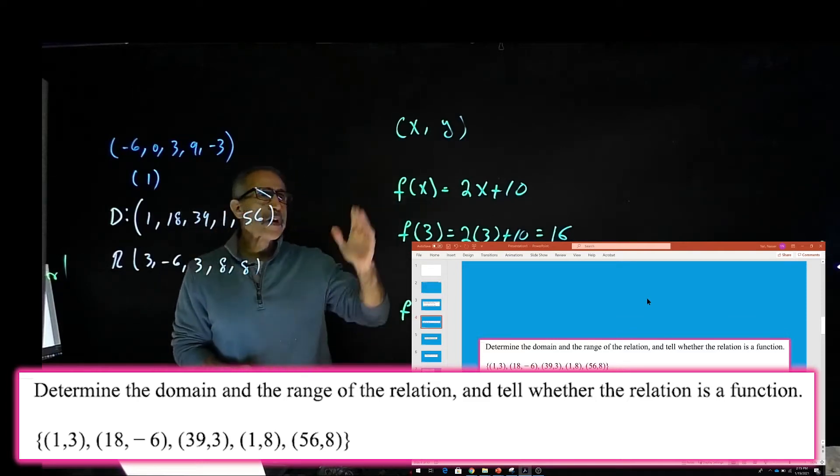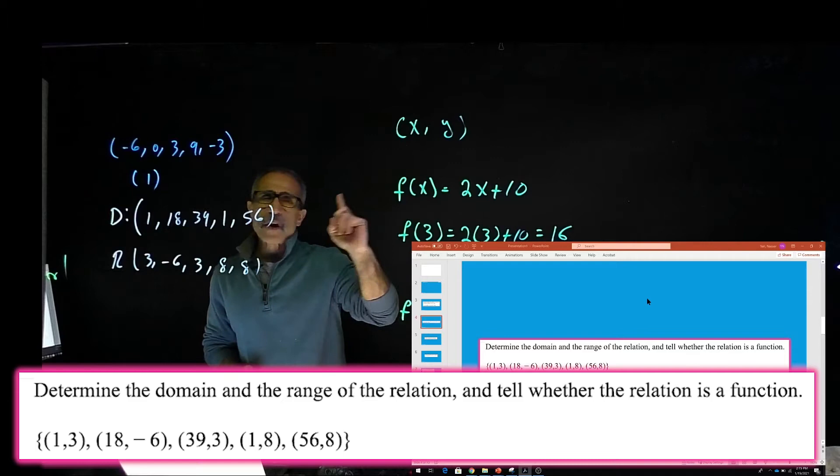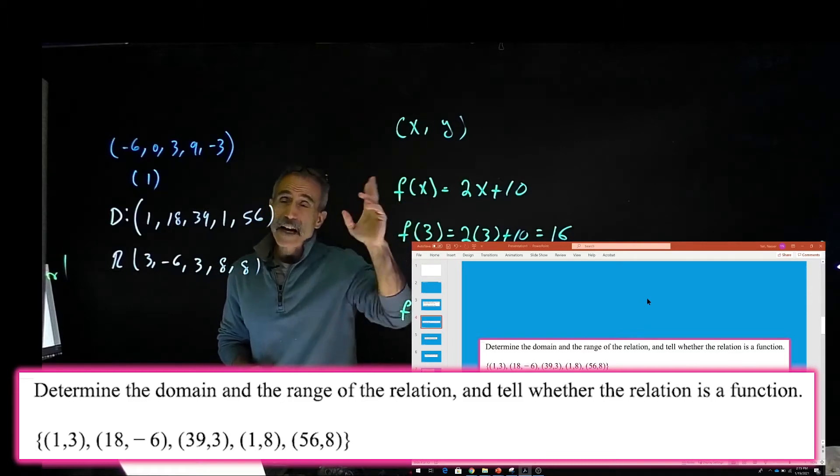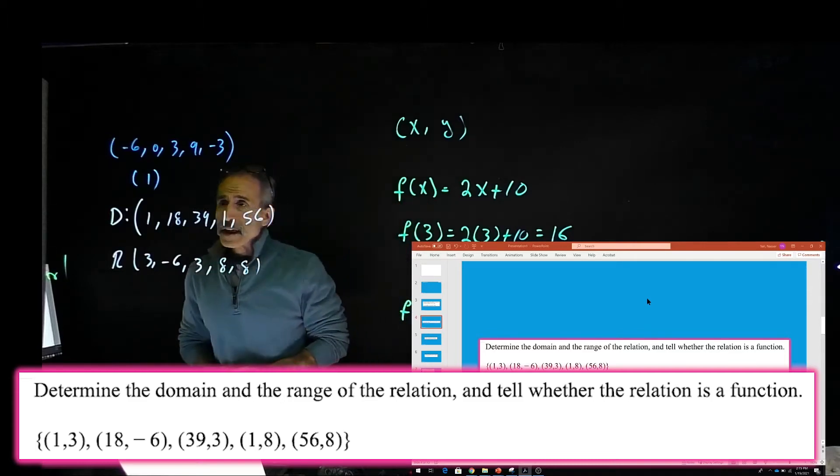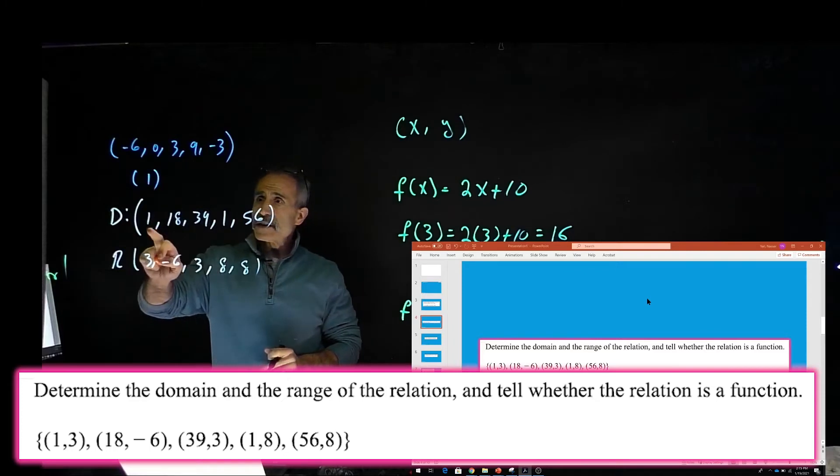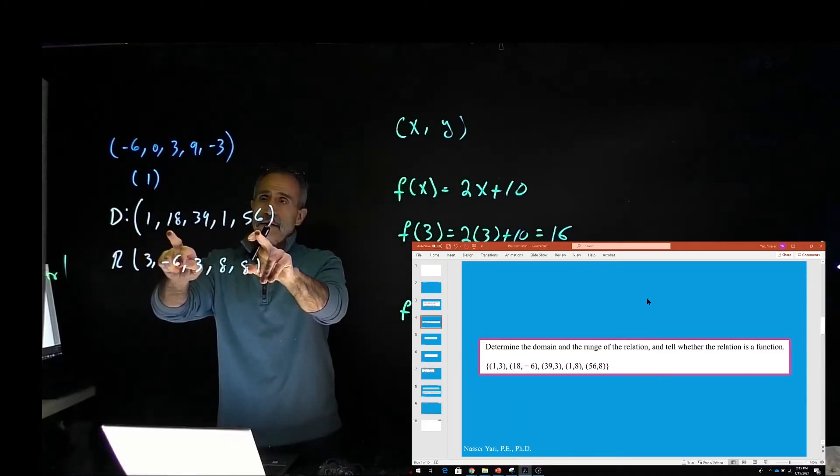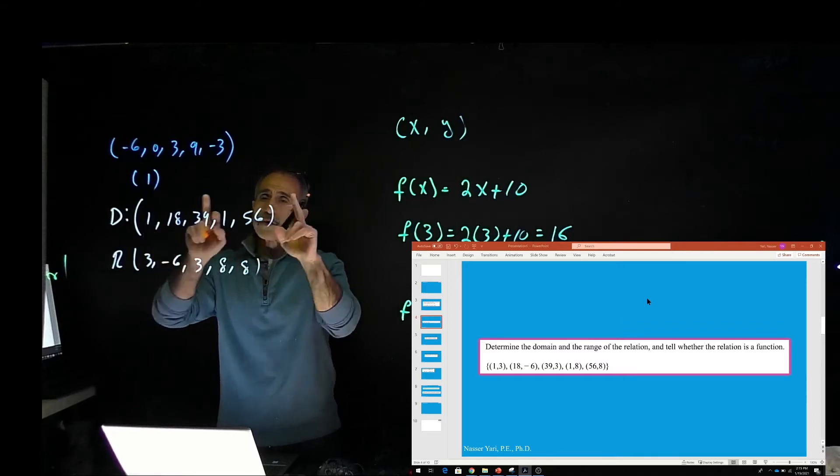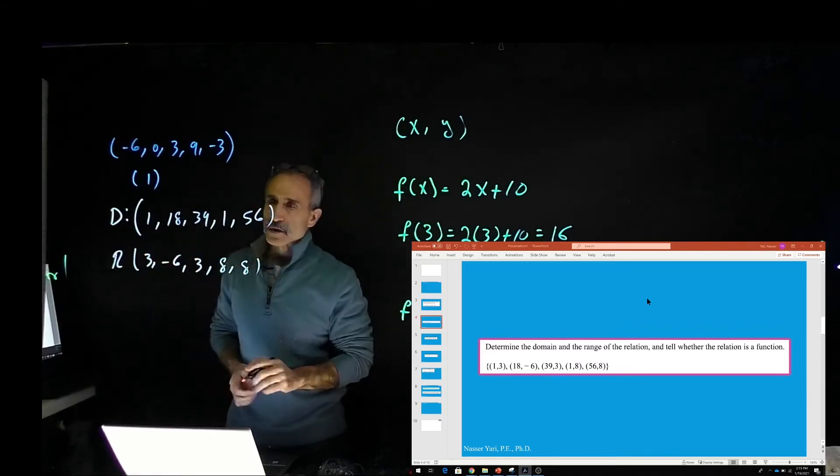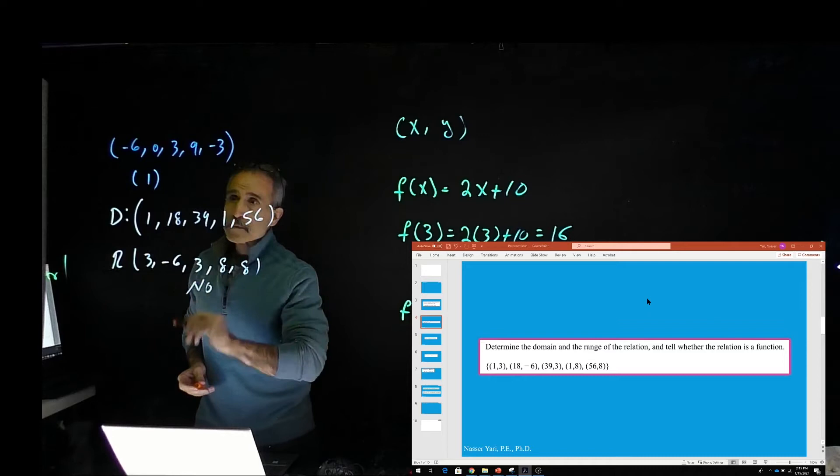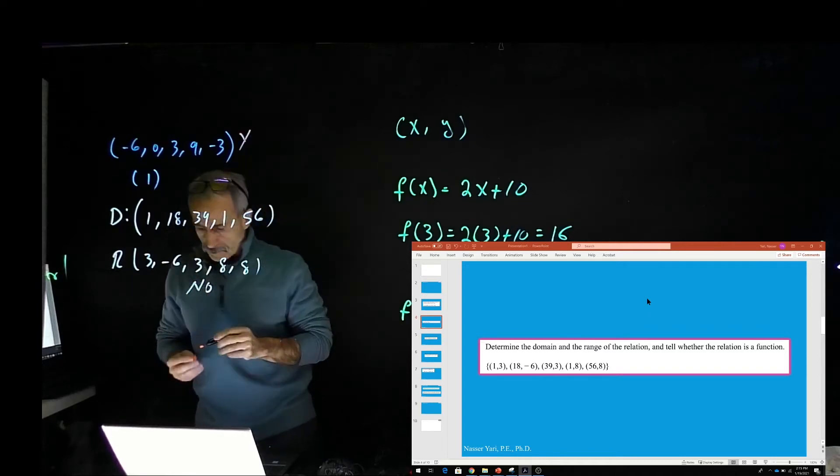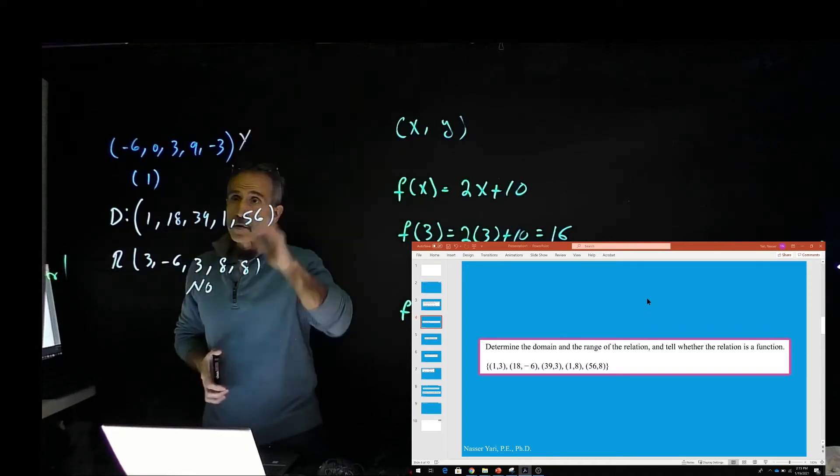Now we said when we have a function, for one input which we're going to put in here, we should exactly get one output. In here, the x is 1 twice, and you got two different numbers. That's not a function. Because for one input, you got two outputs. So no function. This one is no. That one was yes.